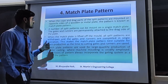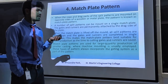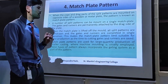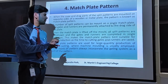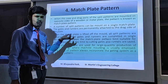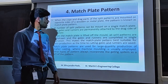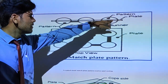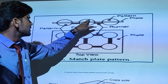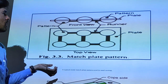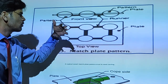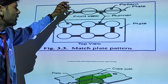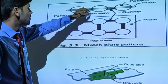Another type of pattern is called the match plate pattern. Some patterns, like links with irregular shapes, are very difficult to hold and place in the moulding boxes. At that time, the part is attached to a plate, and that plate is kept in between the two boxes. That plate is called a match plate pattern. Objects with curved or irregular shapes, which would disturb the entire mould during removal, are instead attached to this plate.